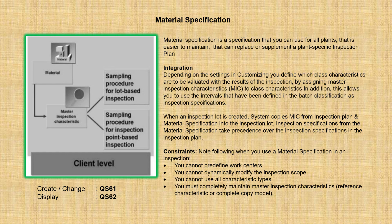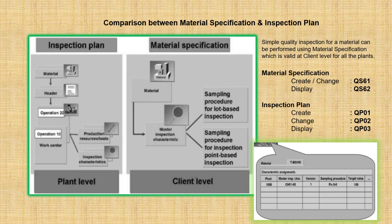In quality management, we can inspect the material based on the inspection plan or using the material specification. Material specification is another master data which can be used for inspecting the material field. Here also, we can assign different MICs to be tested and the sampling procedure to be used for the calculation of the sample size. It is much simpler compared to the inspection plan. A single material specification can be used for all the plants which are present.